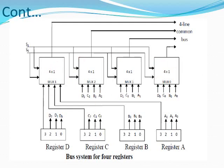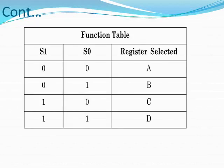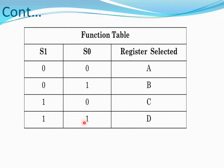This is the function table for the common bus system using 4 multiplexers. S1 and S0 are the selection lines. If S1,S0=00, Register A is selected. If S1,S0=01, Register B is selected. If S1=1 and S0=0, Register C is selected. If S1,S0=11, Register D is selected. According to the value of S1 and S0, we receive the selected register on the 4-line common bus.